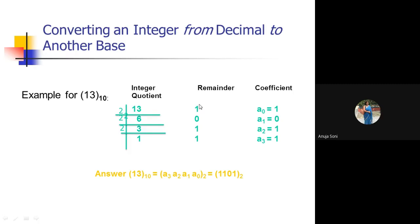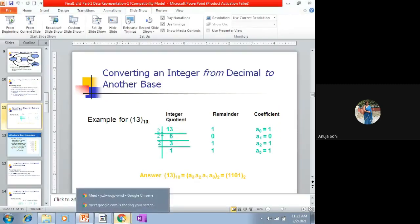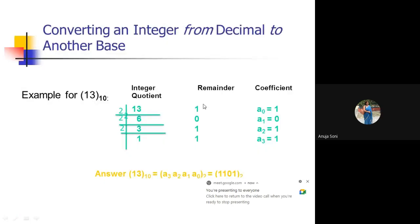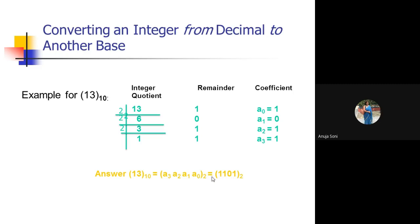So ultimately, you have to reversely concatenate — put a down arrow to show the direction. You have to reversely concatenate all these remainders in order to generate your final resultant value. Starting from the extreme right-hand side: the first remainder generated becomes the least significant bit, kept on the extreme right. The next value is at the second position from the right, and so on — reversely you concatenate to get the final value.